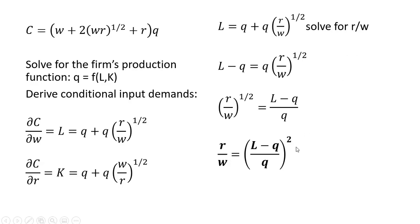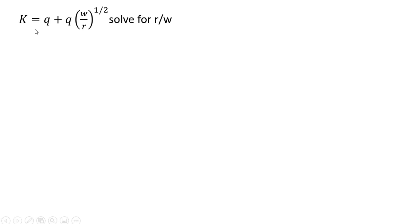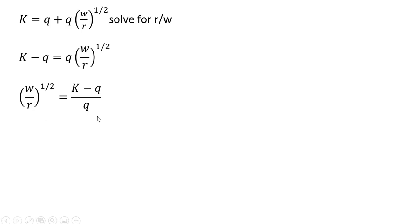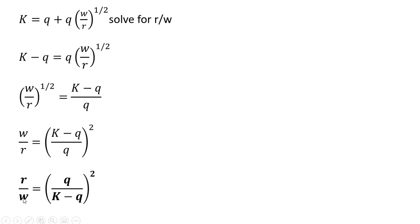We're going to do a similar thing for this K equation — this conditional input demand for capital. We're going to solve it for R divided by W as well. First moving Q over to the left-hand side and dividing through by Q. Then we square both sides. To get R divided by W, taking the reciprocal of both sides gives us this result.